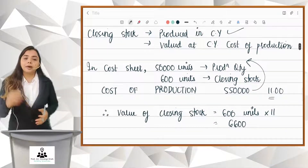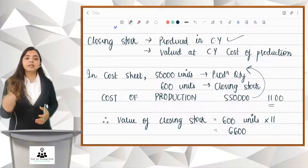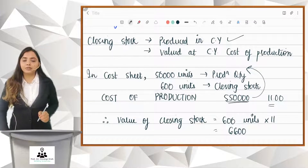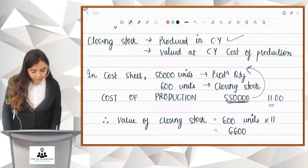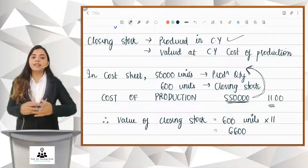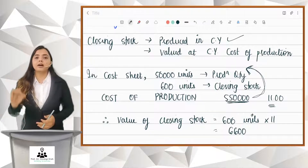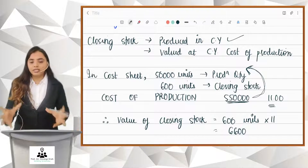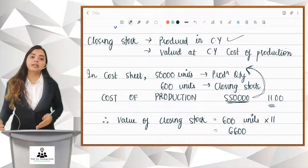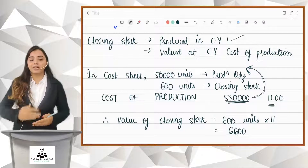Let's take a numerical example. In the cost sheet, 50,000 units are there as production quantity, and there are 600 units of closing stock. If you have cost of production — let's say 5,50,000 — how much per unit? 5,50,000 divided by production quantity 50,000, you get 11 per unit. So what will be the value of closing stock? Very simple — 600 units into 11, you get 6,600. This is how your closing stock is to be valued. You take the cost of production for the current year as calculated in the cost sheet, divide the total by production quantity — that would be the current year's cost of production per unit.